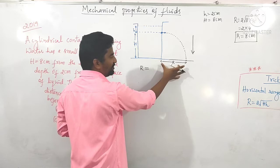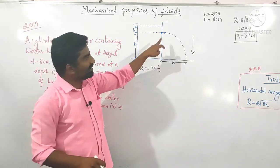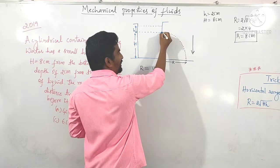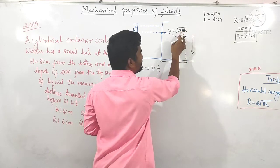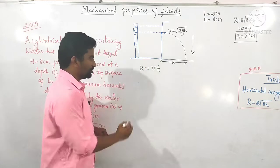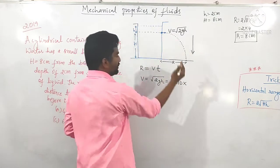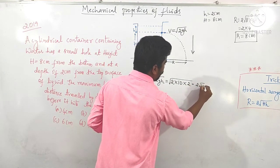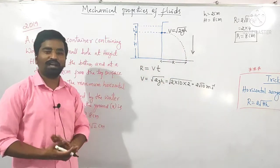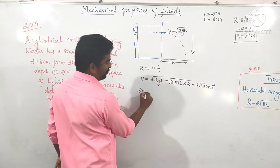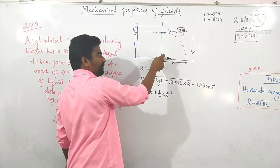The horizontal range equals distance, and distance equals velocity into time. Gravity acts only in the vertical direction, so we need to calculate velocity and time separately. The velocity of fluid coming from the hole equals the velocity of a freely falling body: v = square root of 2gh, where h is the depth from the top surface. With g = 10 and h = 2 cm, v = square root of (2 into 10 into 0.02) = 2 root 10 meters per second.